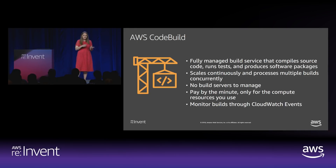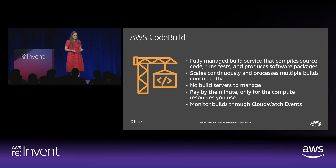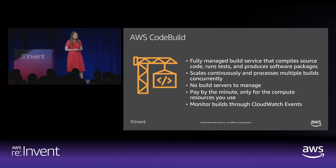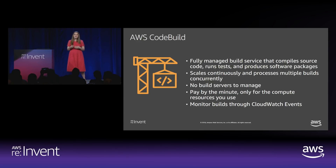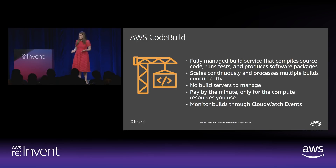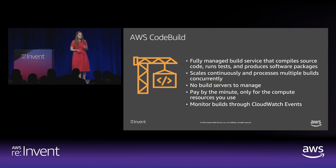Let's move on to the build phase of continuous integration. For that, I use AWS CodeBuild — a fully managed build service that compiles code, runs tests like unit tests or even integration tests, and then produces software packages like container images and Lambda deployment packages. It scales continuously and processes multiple builds concurrently, so you don't have to worry about a build queue. You also don't have to worry about any build servers to manage — it is also serverless, and you pay by the minute for only the compute resources you use. To complete the feedback loop back to developers, you can monitor builds through CloudWatch Events, or CodePipeline will monitor the build for you.